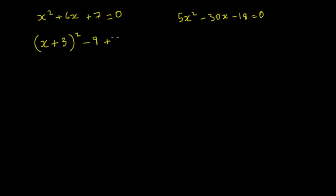So that's going to leave us with our x plus 3 all squared, minus 9 plus 7 is minus 2, so that's quite a straightforward one.